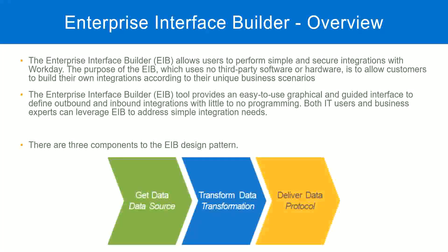When we create an integration using EIB, we will see these three steps: get data, transform data, deliver data. These are the three components in an EIB design pattern. We configure where to get the data from, whether transformation is needed — if yes, configure it; if no, leave it blank — and how to deliver the data to an external system. Once we do these three steps, our EIB is ready and we can start exchanging information from Workday with an external system.